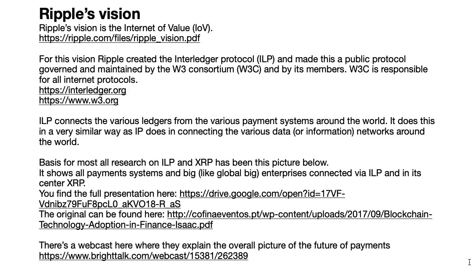So Ripple focuses on solving the three problems: cost, speed, and interoperability. Now let's take a look at the vision of Ripple. Ripple's vision is called the Internet of Value. We already had two industrial revolutions — one was the shipping container, which made shipping of products easy, and the second was the creation of the internet, which made information exchange totally easy.